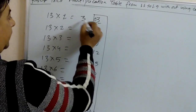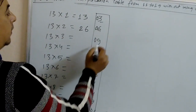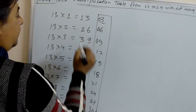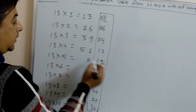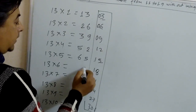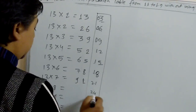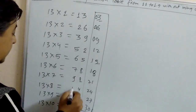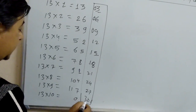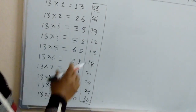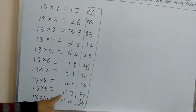Last digit keep the same, and 0 plus 1 is 1. Last digit 6 keep same, 0 plus 2 is 2. Keep same, 0 plus 3 is 3. Then 4 plus 1 is 5 — so 52. 5 as it is, 1 plus 5 is 6. 8 as it is, 1 plus 6 is 7. 1 as it is, 1 plus 7 is 9 — so 91. Wait — 4 as it is, 2 plus 8 is 10. 7 as it is, 2 plus 9 is 11. 0 as it is, 3 plus 10 is 13. So the table of 13 is: 13, 26, 39, 52, 65, 78, 91, 104, 117, 130.